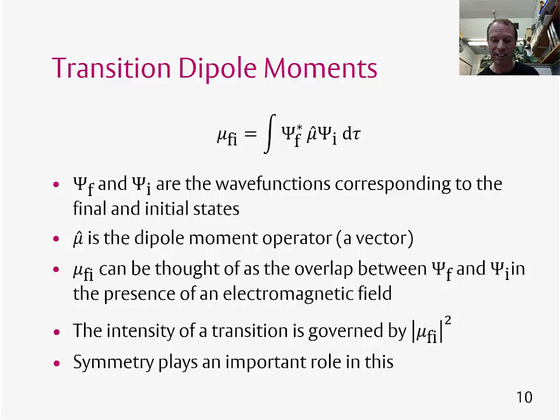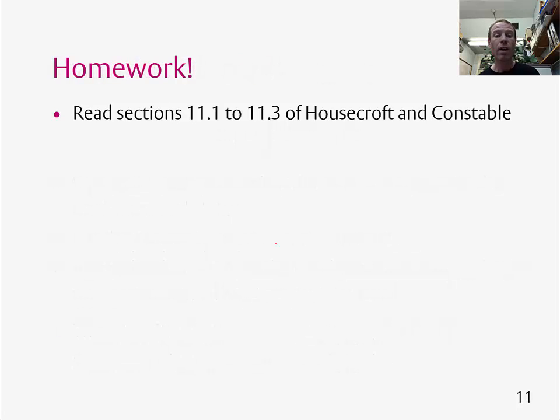Symmetry actually allows us lots of shortcuts for calculating whether a transition is going to be allowed or not, but we're not going to be considering this as part of this course. This brings us to the end of topic one. Now your homework is to go and read sections 11.1 to 11.3 of Housecroft and Constable.